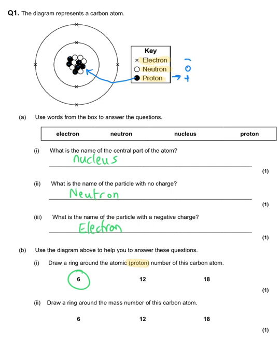Draw a ring around the mass number for this carbon atom. The mass number is the number of protons added to the number of neutrons. We've already counted six protons, and there are also one, two, three, four, five, six neutrons. So six plus six equals 12, which is the mass number.